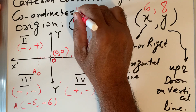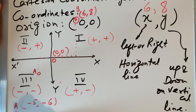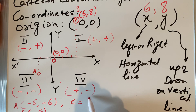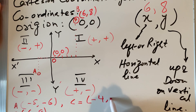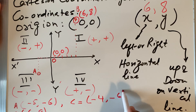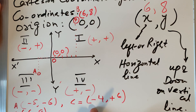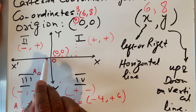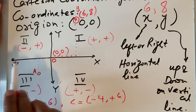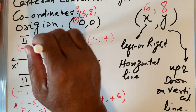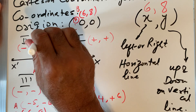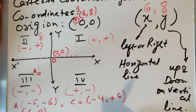I can name the earlier point B, which was (6, 8). Now let me plot point C with coordinates (-4, +6). Since x is negative, I go 4 units to the left on the horizontal axis, and then 6 units up. This is my point C at (-4, +6).